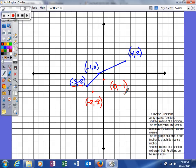And then lastly, 4 comma 2 will also have a point that is its inverse, and it will be the pair 2 comma 4.